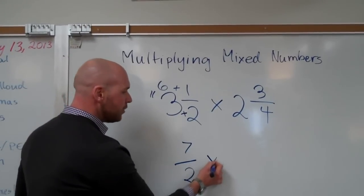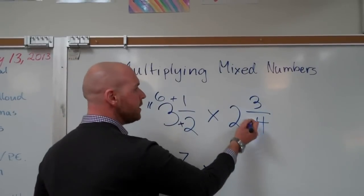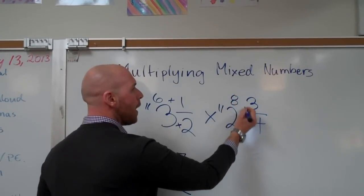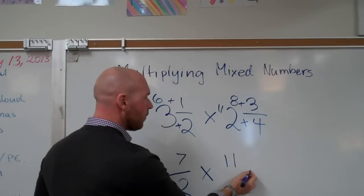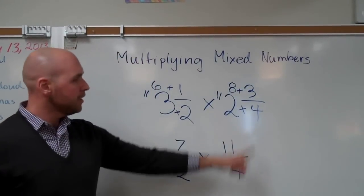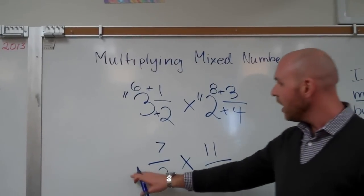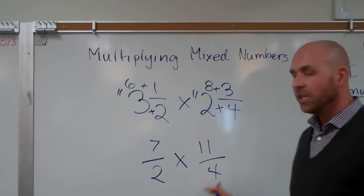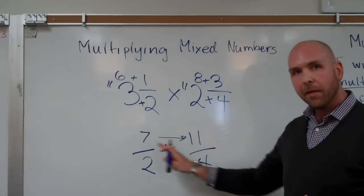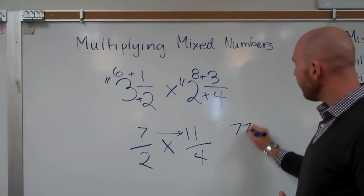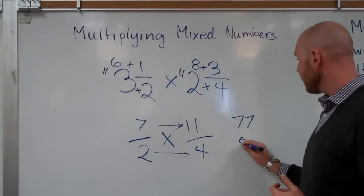Multiplication stays the same. Now I need to convert the second one. Four times two equals eight, plus three — eight plus three is eleven — over four. The denominator stays the same. Now I have an improper fraction times an improper fraction. I can do this. Seven times eleven — multiplying my numerators — is seventy-seven. Now I multiply my denominators: two times four is eight.